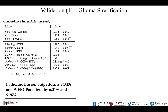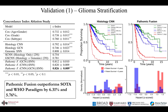On glioma stratification, Pathomic Fusion using three modalities outperforms the previous state-of-the-art and WHO paradigm with a 6% increase in concordance index. In comparing Pathomic Fusion against a single modality such as histology CNN, we observe that predicted risks from Pathomic Fusion closely follow the WHO grading system, whereas predicted risks from histology CNN often confuse grade 3 and grade 4 gliomas. As shown in the bottom right, Pathomic Fusion correctly assigns high and low risk to the correct groups of patients, whereas histology CNN confuses the two groups.